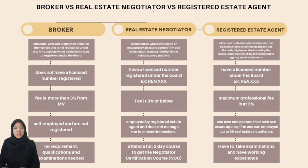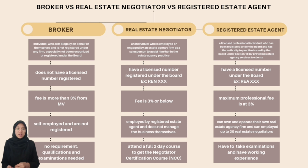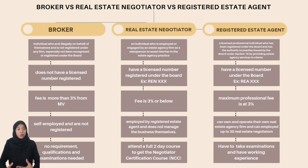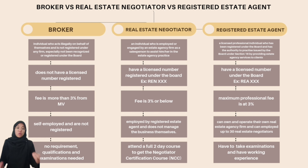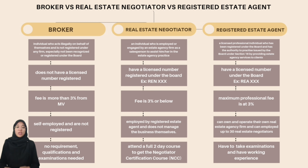Brokers do not have a license number, which distinguishes them as illegal practitioners in the realm of estate agency. In general, a registered estate agent or negotiator has a standard maximum fee of 3% from their listed property, but brokers mark up the selling price of their property to gain more profit. Brokers are often self-employed and practice their services without any requisite qualification or examination, and with no standards to adhere to, they are not obligated to any specific regulations. Consequently, the public should be cautious as they are unauthorized agents.